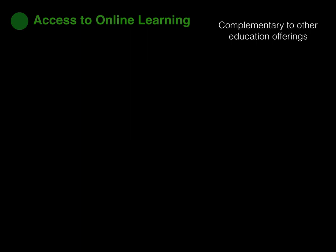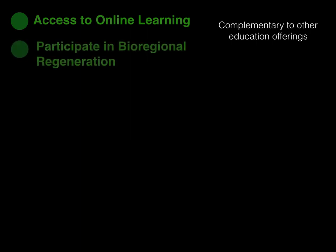Members of the Design School will have access to online learning that is complementary to other educational offerings. For example, if you are a student at a university and you feel that the theoretical knowledge you're gaining could benefit from being connected to the work on the ground, or that there are topics or themes you'd like to learn more about, there will be opportunities to learn these things through the online platform. There's also the opportunity to participate in bioregional regeneration, which means that we blend theory and practice with on-the-ground learning and applying what we learn directly to the real world as we learn it.